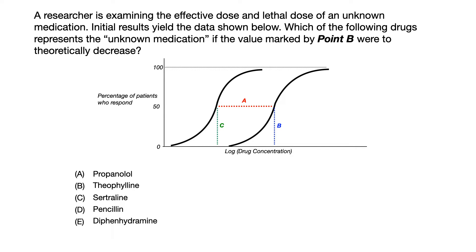If you need some more time, pause the video now because I'm about to give you the answer. The correct answer in this practice question is choice B, Theophylline. Now let's look at what exactly we needed to identify in the infographic here in order to get this question right.